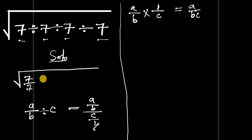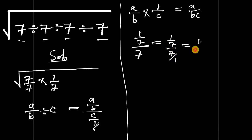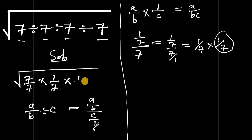So this equals a divided by b times c. Applying this to our expression, we have seven divided by seven, times one over seven — and our c here is seven, so we have one over seven. Now if you also divide this one over seven by seven, you get one over seven divided by seven, which equals one over seven times one over seven.